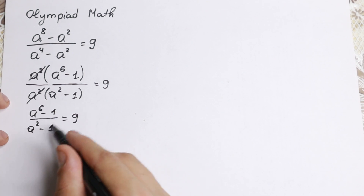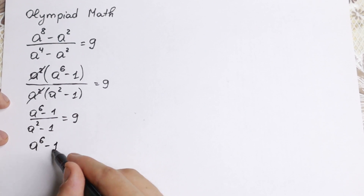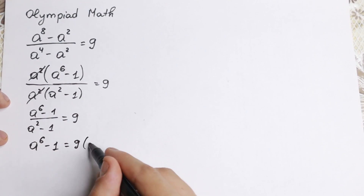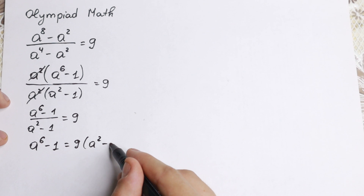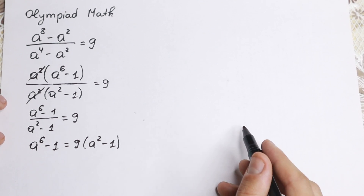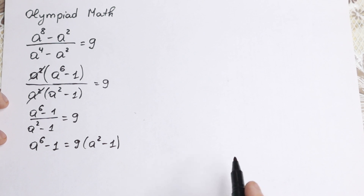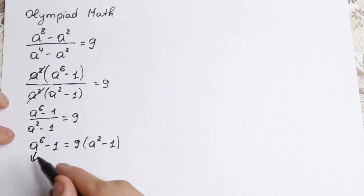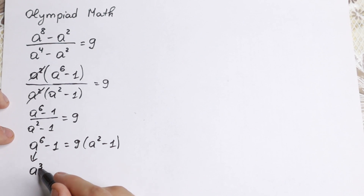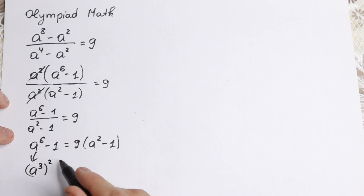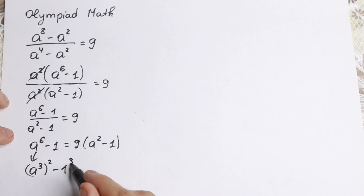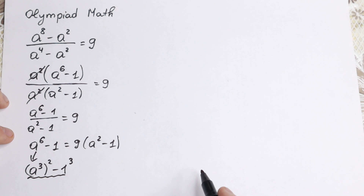We need to cross multiply. We get a to the sixth minus 1 equal to 9 times a squared minus 1. Now, it's really useful to know the formula for the difference of cubes. Why? Because a to the sixth is great to write as a squared, cubed. And the 1 is great to write as 1 cubed. But I want to write it in another way.